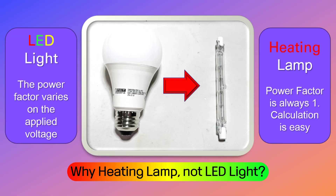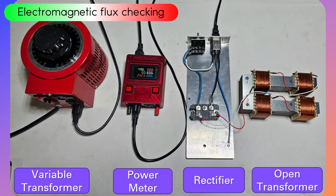Why do I need a heating lamp and not an LED light? The power factor of an LED light varies with applied voltage. On the contrary, the heating lamp power factor is always 1, so the output power calculation is easy. Please remember, I have only one power meter. This is a setup view to measure the strength of the electromagnetic flux that two primary coils can produce in a transformer with one side open.